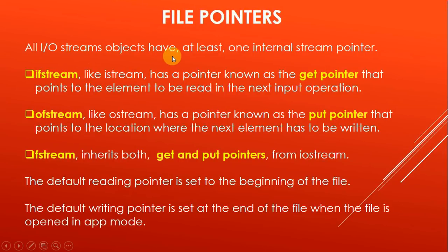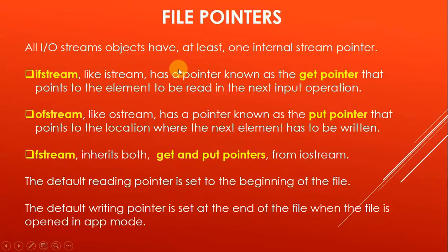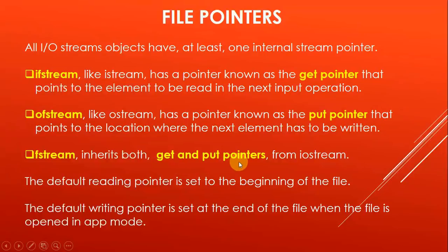All iostream objects have at least one internal stream pointer. An istream object has a pointer known as the get pointer, which points to the element to be read for the next input operation. An ostream object has a pointer known as the put pointer, which points to the location where the next element has to be written. An fstream object inherits both get and put pointers from iostream.